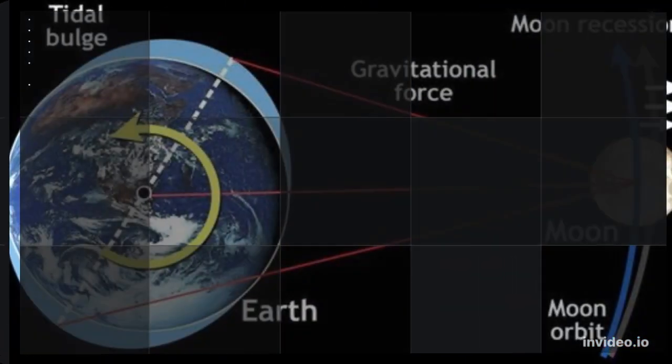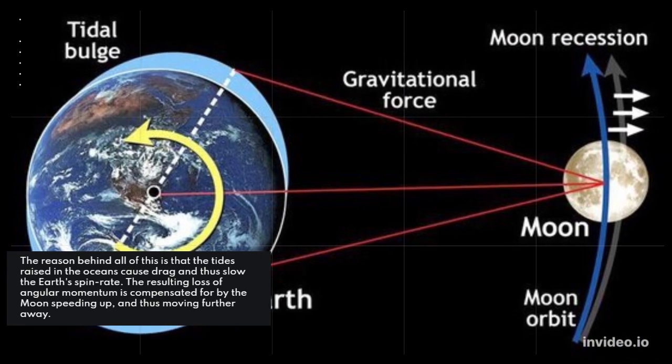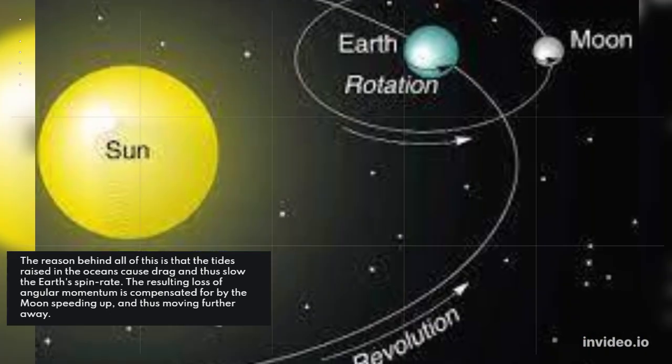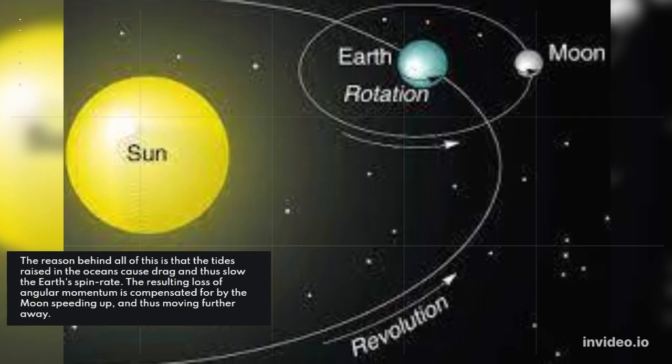The reason behind all of this is that the tides raised in the oceans cause drag and thus slow the Earth's spin rate. The resulting loss of angular momentum is compensated for by the Moon speeding up and thus moving further away.